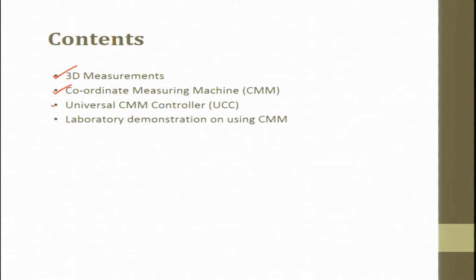We have a UCC — universal CMM controller — that is a kind of inbuilt component of the whole CMM machine. The controller that controls the machine is known as UCC. In the laboratory demonstration on using CMM, we will show you the parts, the various heads, all the axes, the degrees of freedom, and we will also try to measure one component that would be a kind of standard component.